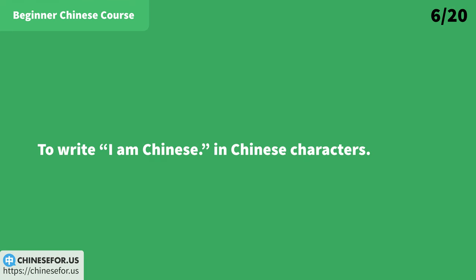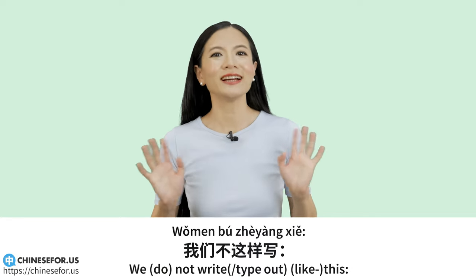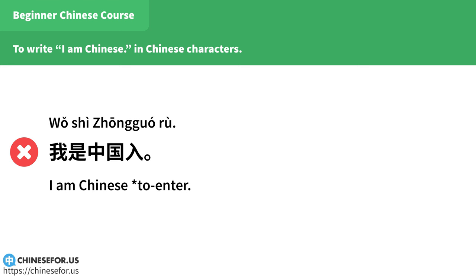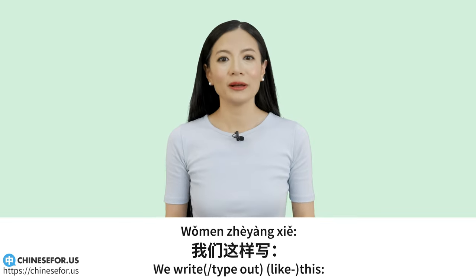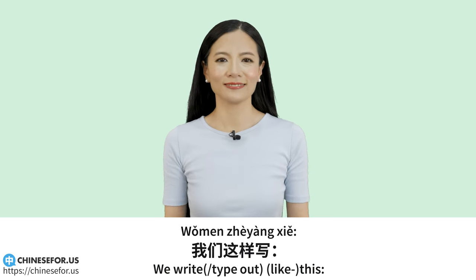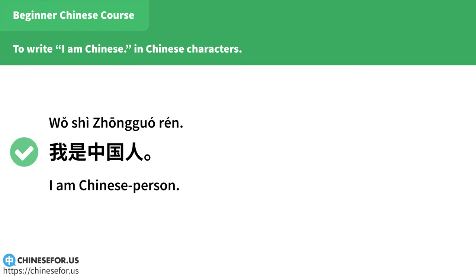To write "I am Chinese" in Chinese characters: 我们不这样写「我是中国入」，我们这样写「我是中国人」。（注意「人」不是「入」。）